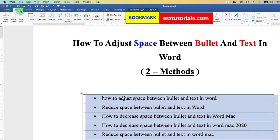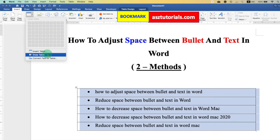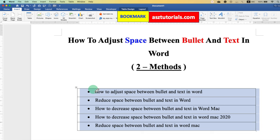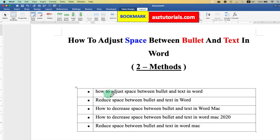Go back to the insert table. And this time select draw table. And draw a line between the bullet point and the text. So, they will be separated.